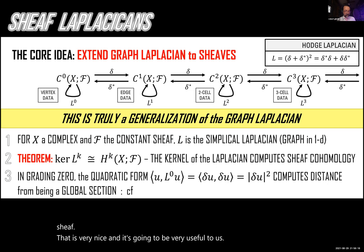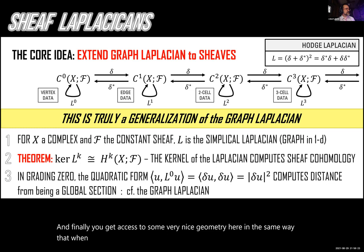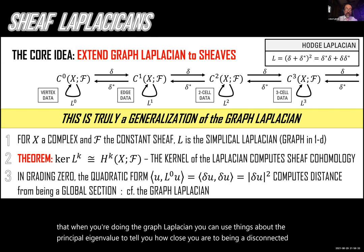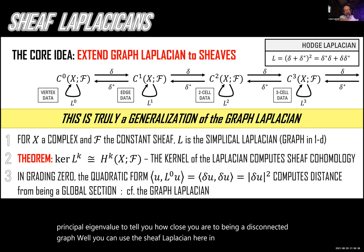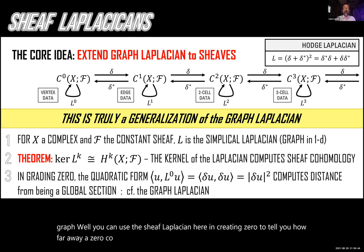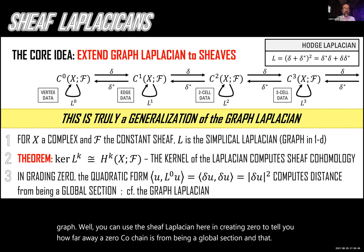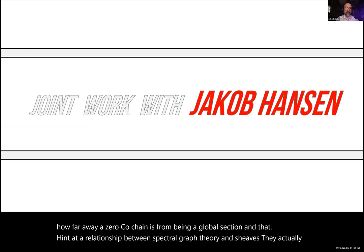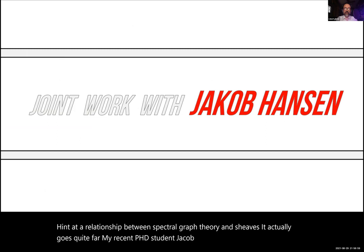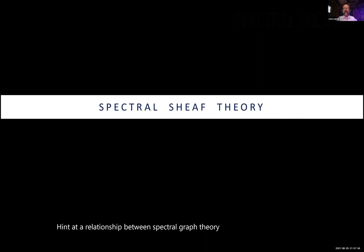You get access to nice geometry here. Just as the graph Laplacian's principal eigenvalue tells you how close you are to having a disconnected graph, you can use the sheaf Laplacian in grading zero to tell you how far away a zero co-chain is from being a global section. This relationship between spectral graph theory and sheaves goes quite far. My recent PhD student Jacob Hansen wrote a really nice thesis fleshing out what we called spectral sheaf theory.